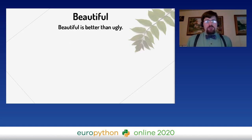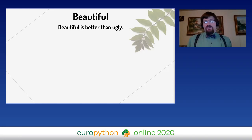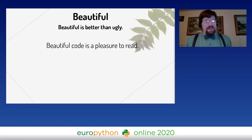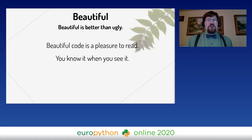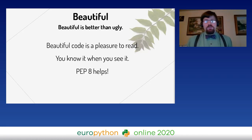Pythonic code is readable and obvious. It's also beautiful — beautiful is better than ugly. The trouble is, what is beautiful code? It's a bit like beauty in the eye of the beholder. But however you define it, beautiful code is always a pleasure to read. You know beautiful code when you see it, and you know ugly code when you see it. Most people would agree given one piece of code — yeah, that's pretty bad, or yeah, that's pretty good. This is why we have the PEP 8 style guide.